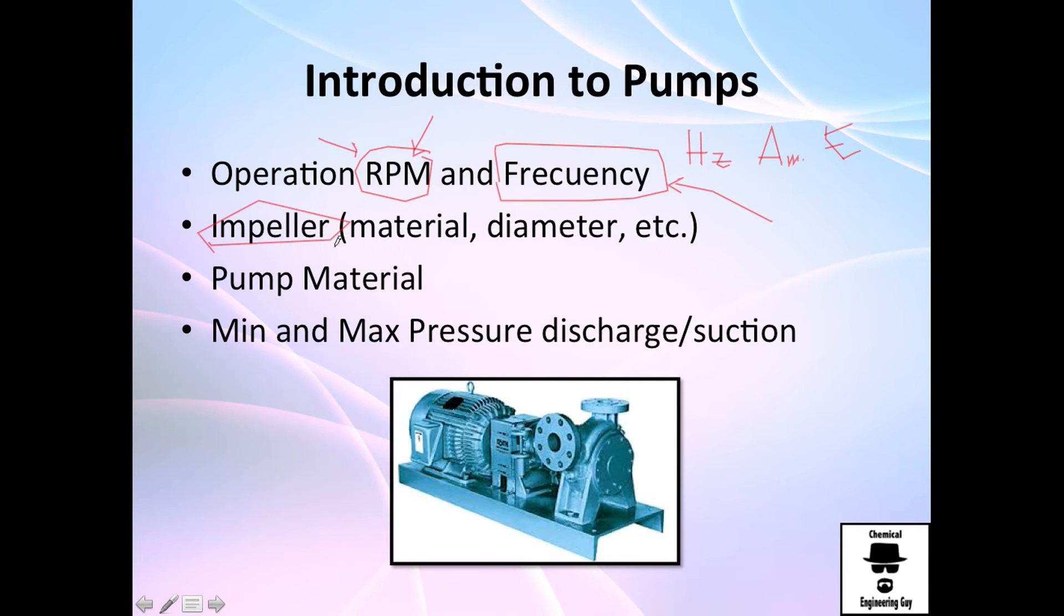The impeller, what type of material. Is it steel or is it iron, what's being used. The diameter is what's important, the size, the angle, all those. The shape of the impeller is very important. Pump material as well and the minimum and maximum discharge and suction pressure. So what is the minimum operation pressure right here and the maximum operation right here. Is it suitable for your operation or even for your pipe? Is it safe or is it not safe? You need to check out that as well.